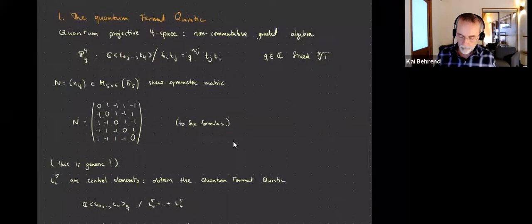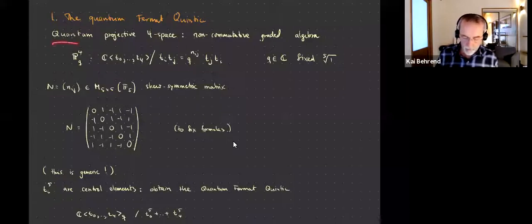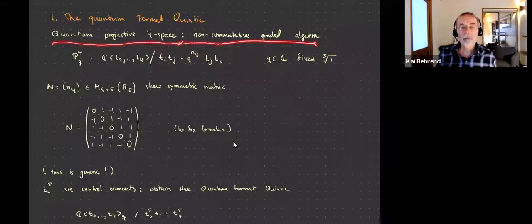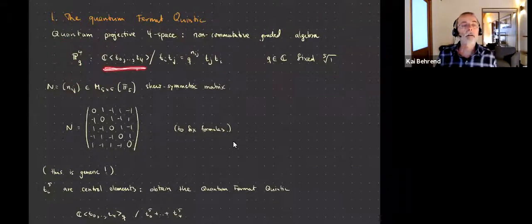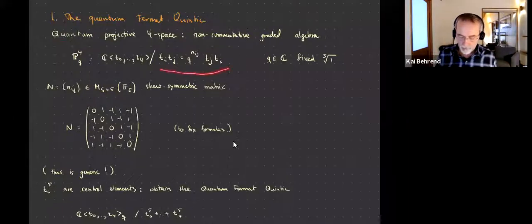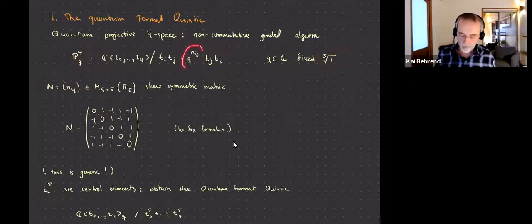So the quantum Fermat quintic — what is it, first of all? We start with quantum projective four-space. That's the noncommutative graded algebra generated by a free algebra on five generators, zero to four. These generators don't commute: t_i times t_j is not t_j t_i, but they commute up to a parameter q, which is a fixed fifth root of unity. The n_{ij} are integers, so these are fifth roots of unity.